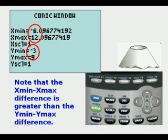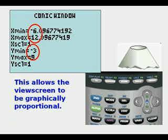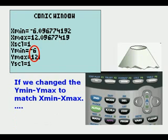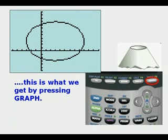Note that the Xmin Xmax difference is greater than the Ymin to Ymax difference. That adjusts for screen proportionality. If we change Ymin Ymax to match Xmin Xmax, we're going to get an elliptical shape because this will come back to the screen distortion.